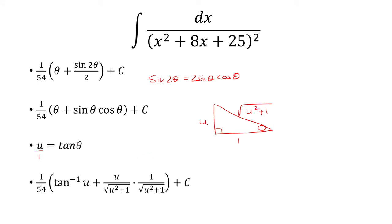Okay, so I'm going to replace theta with just the inverse tangent of u. Okay, so you just undo the tangent by taking the inverse tangent. Sine theta is opposite over hypotenuse. That's the u over the square root of u squared plus 1. Cosine theta is just adjacent over hypotenuse. And that's the 1 over square root u squared plus 1.